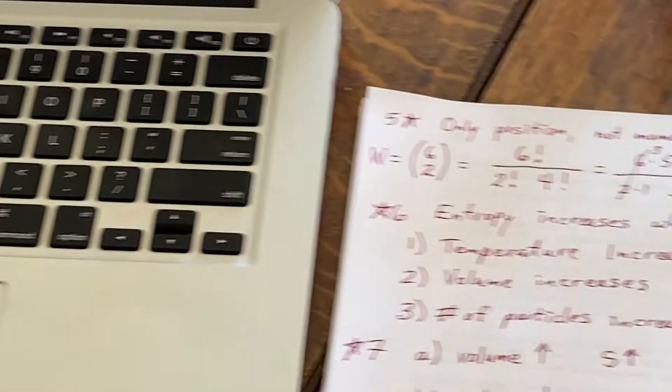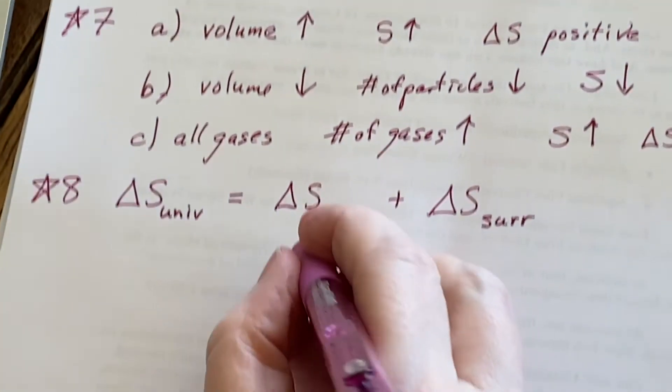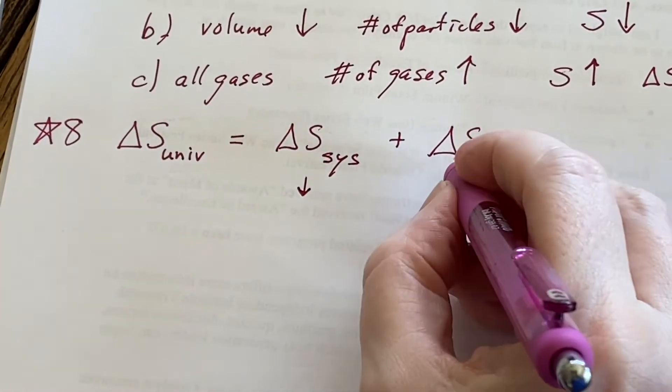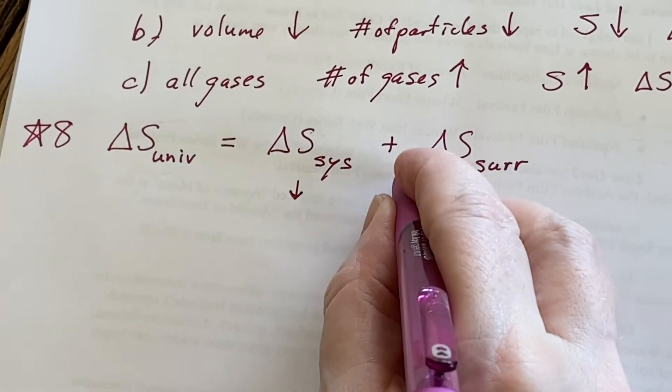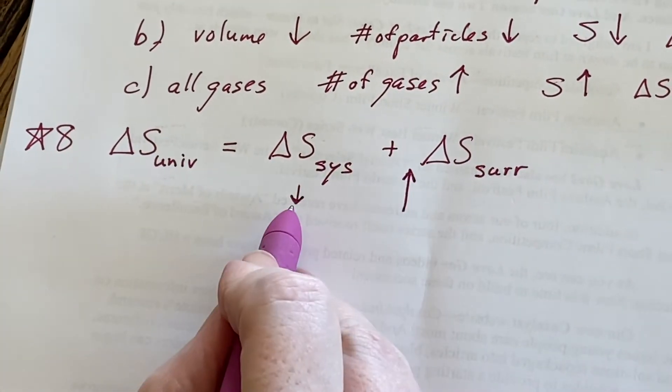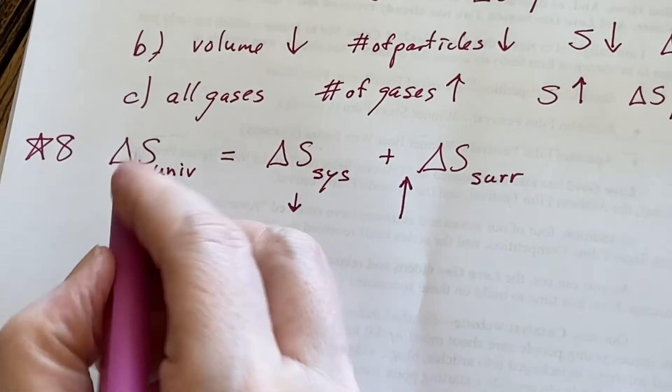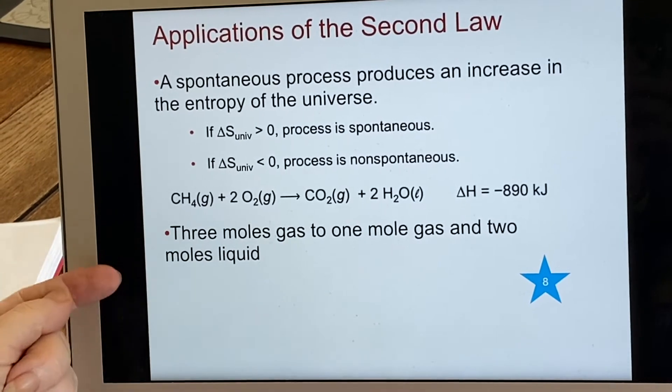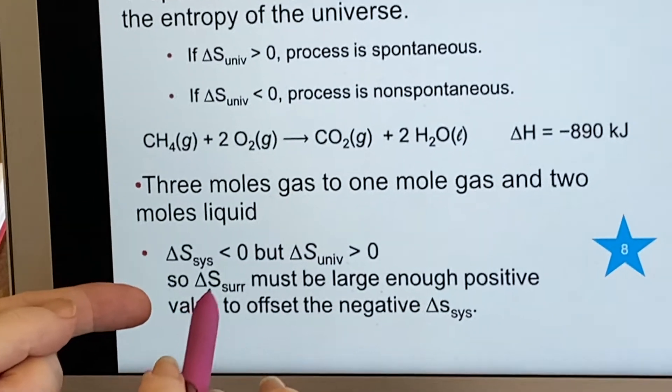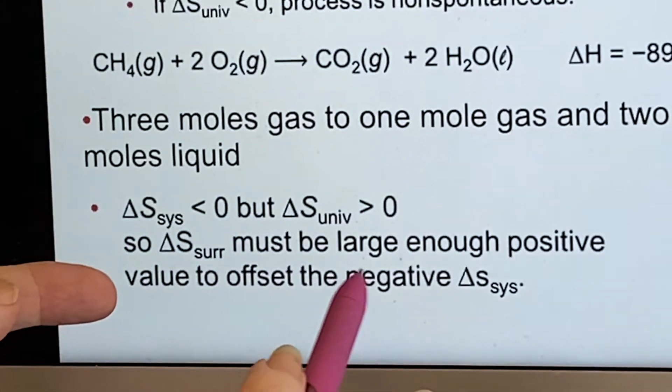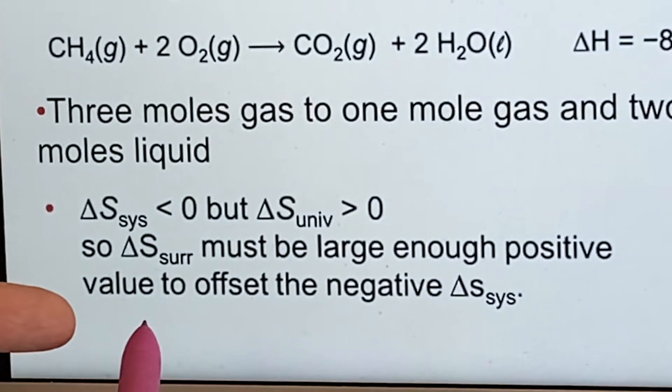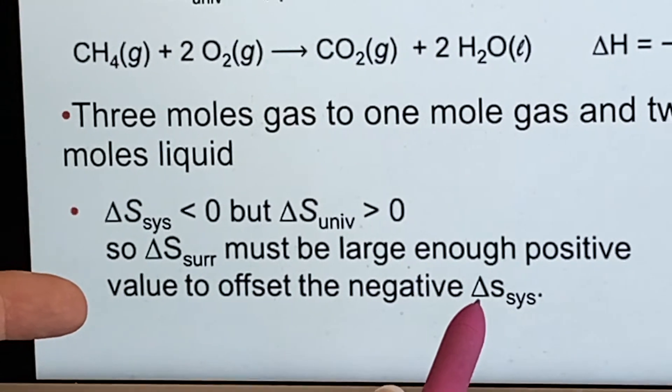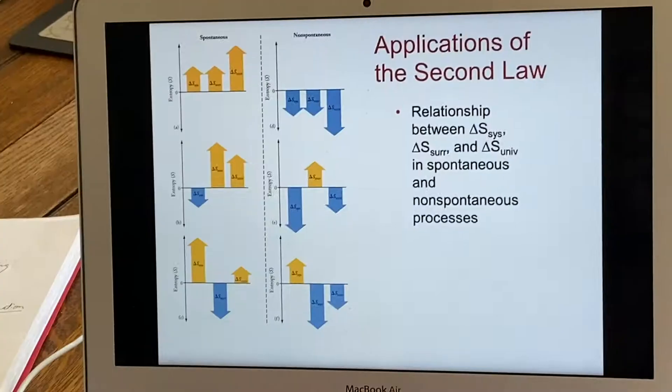This causes more in the surroundings than what this did going down in the system. So this is a case where the delta S of the system was down, but the delta S of the surroundings was up more. So that overall, this increased three moles of stuff to three moles of stuff. And so delta S of the surroundings has to be a large enough positive value to offset the delta S of the system being negative. Here's a summary.